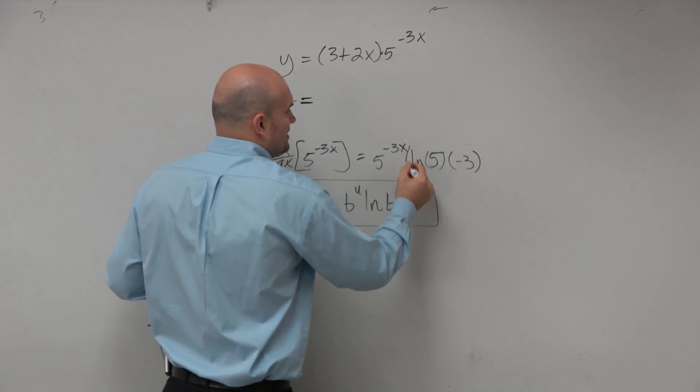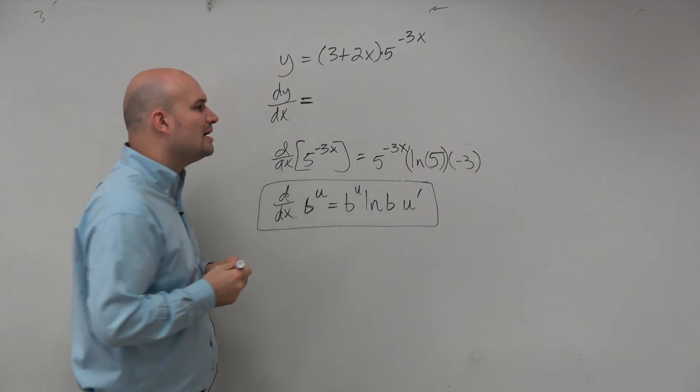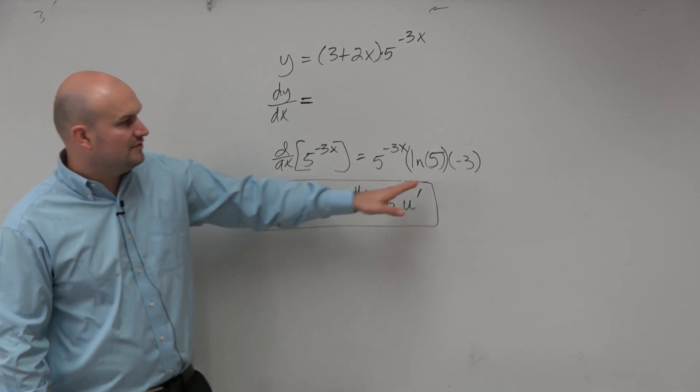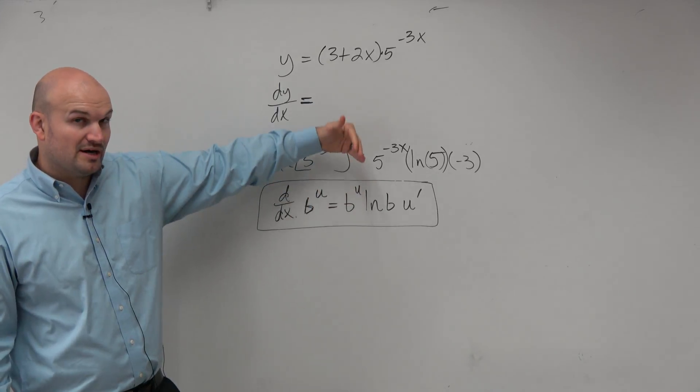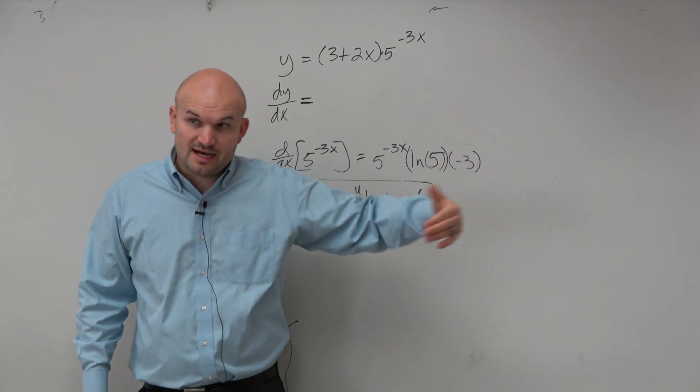OK? So you could put parentheses if you want to. Don't want to confuse like that. That's the ln of 5 times negative 3. So it's better to use parentheses than to not use parentheses.